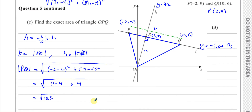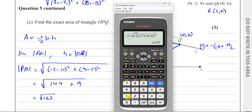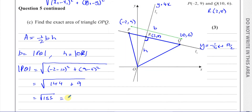Simplifying the square root of 153: this equals 3√17. That's the length PQ, which is the base of the triangle. We must give an exact answer so we keep it in surd form.